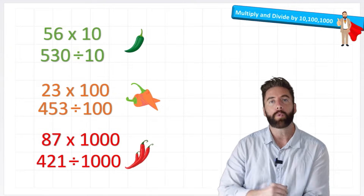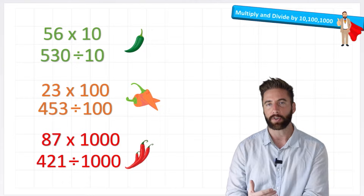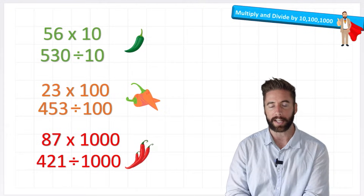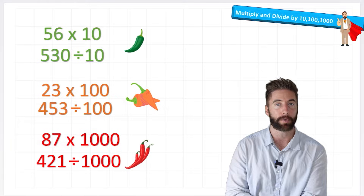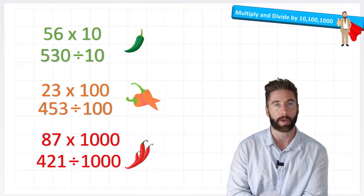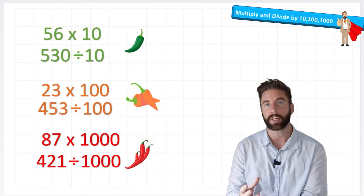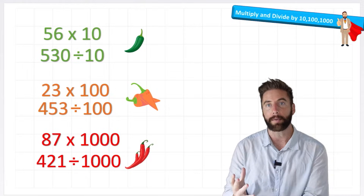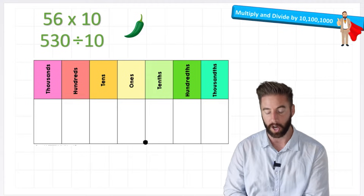So what does it mean to multiply by 10, 100 and 1,000, and why are we grouping this into one lesson? Well, the reason we do that is because these are a special set of numbers that are actually quite easy to multiply and divide. So learning a little trick or a method to do this is going to be very, very helpful. So what is that method? Well, we're going to use the place value chart.